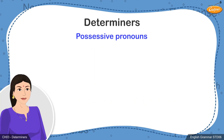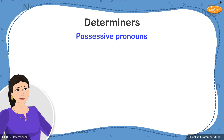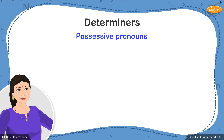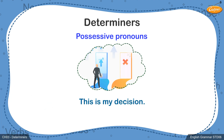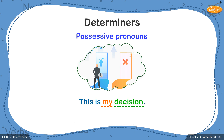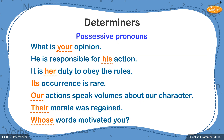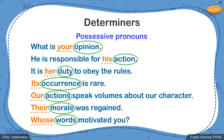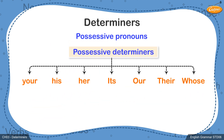Now, we will learn about how possessive pronouns can be used as determiners. Students, possessive pronouns are often used to show that a particular person owns an object or thing. For example, in the sentence 'this is my decision', the pronoun 'my' tells us more about whose decision it is, thus adding more meaning to the noun. The possessive has been used immediately before the noun and is a determiner. Similarly, in the other sentences on the screen, the possessives tell us more about the nouns and are possessive determiners.